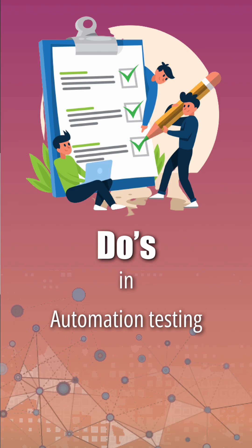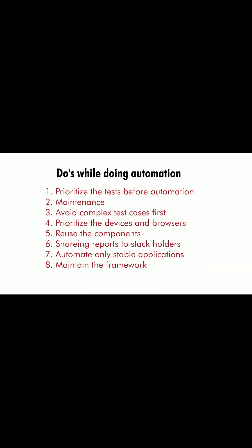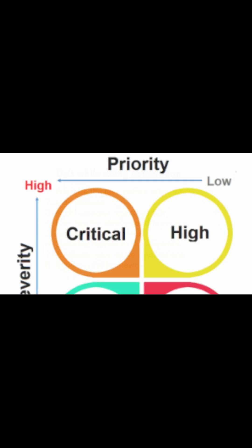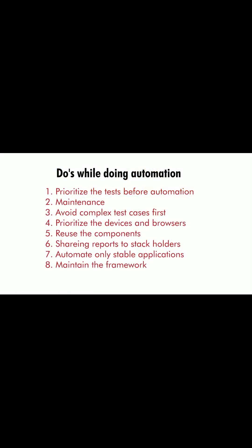Welcome back to our Axel Bus software testing shorts. Today we are going to see the do's, or things you should consider while doing automation. First thing: prioritize your tests before automation. Then maintenance is very important — maintenance in terms of cost, maintenance in terms of employees and time as well. Avoid complex test cases first, as they take time.